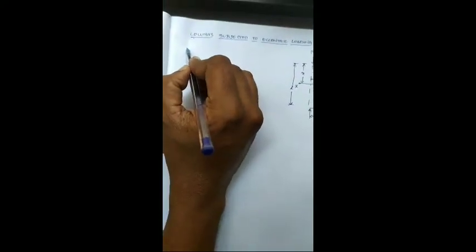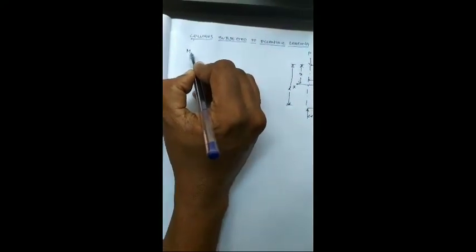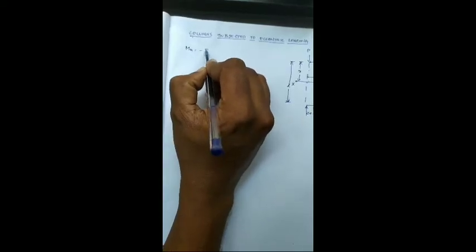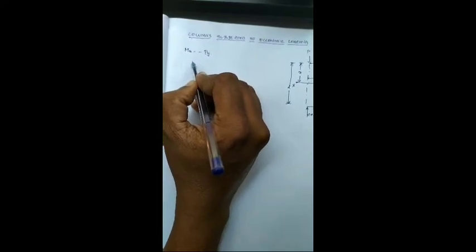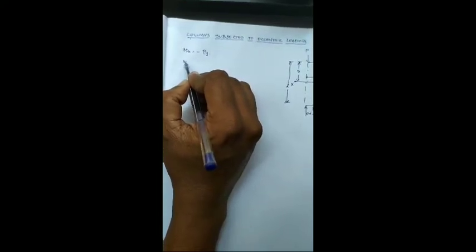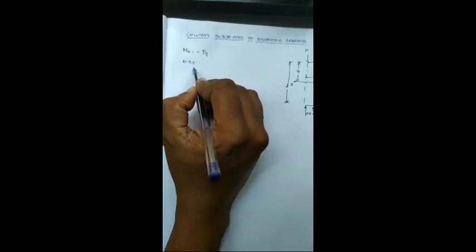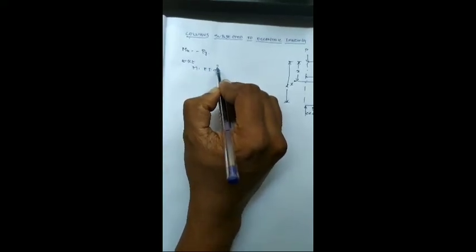Now we are going to find the moment at the section XX which is nothing but minus P of e plus y, which is the formula of load into perpendicular distance, and we are going to substitute in the bending moment equation.